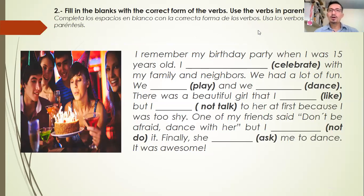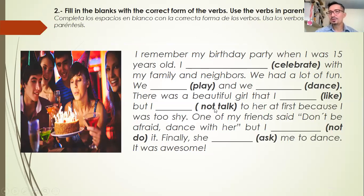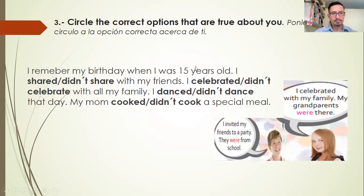Llena los espacios con los verbos que están en paréntesis — hay positivos y negativos. Si hay un 'not', debes hacerlo en forma negativa. Los verbos en paréntesis están en presente — debes cambiarlos al pasado, sean regulares o irregulares. Si tiene el 'not', usa el auxiliar 'did not' o 'didn't'. La primera no tiene el 'not', significa que debe ser positiva.